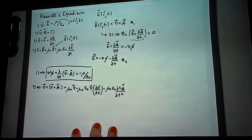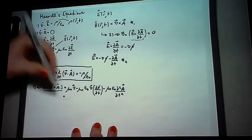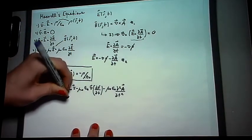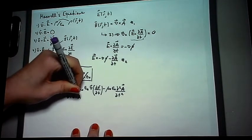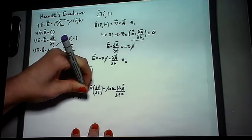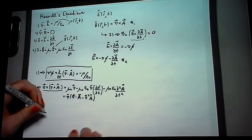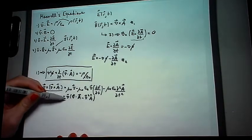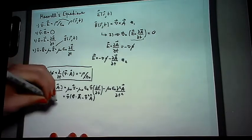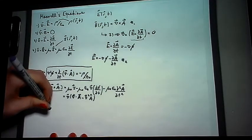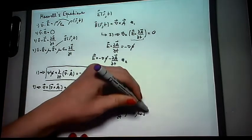Now, a vector identity shows us that this is equal to this. So, we can rearrange the terms in here, like this. Now, let's frame this equation, too.